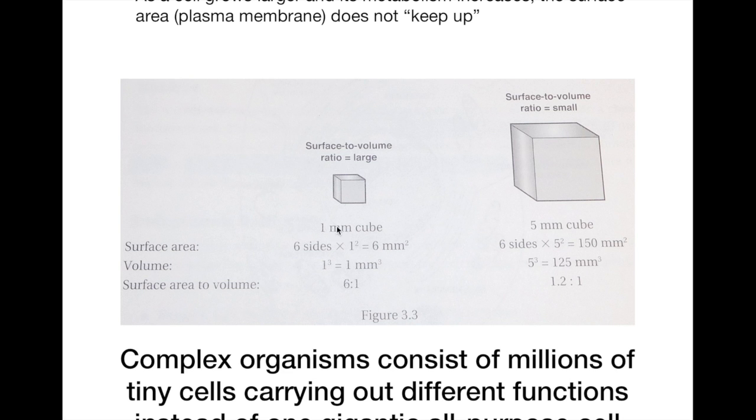If we take into consideration a 1 millimeter cube, the surface area, with R equals 1 millimeter, should be 6 sides times 1 millimeter squared, which gives us 6 millimeters squared. The volume is only 1 millimeter cubed, therefore the surface area to volume ratio is 6 to 1.